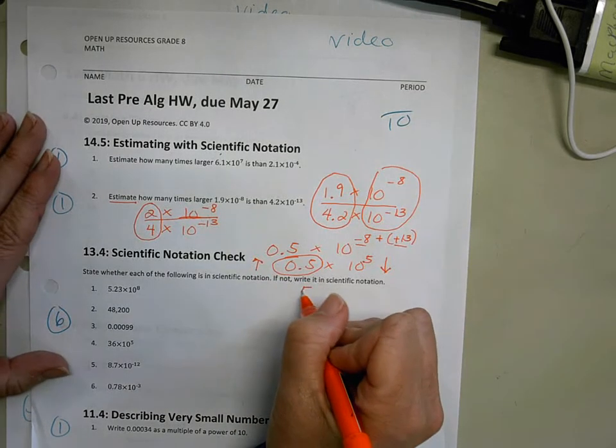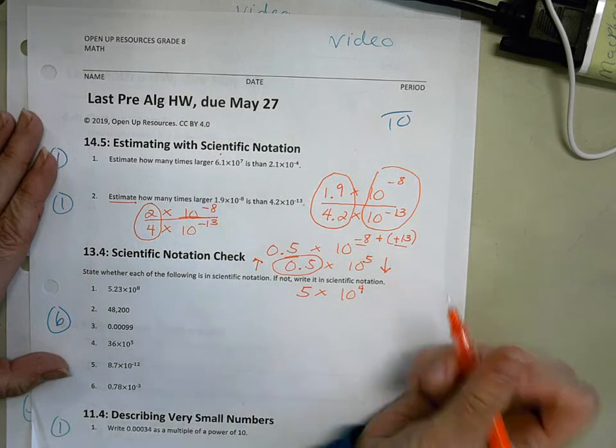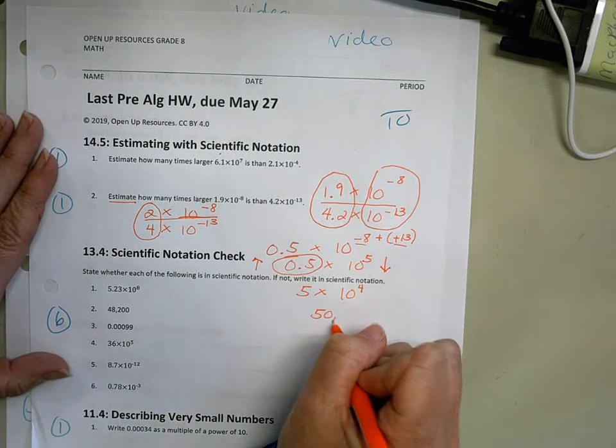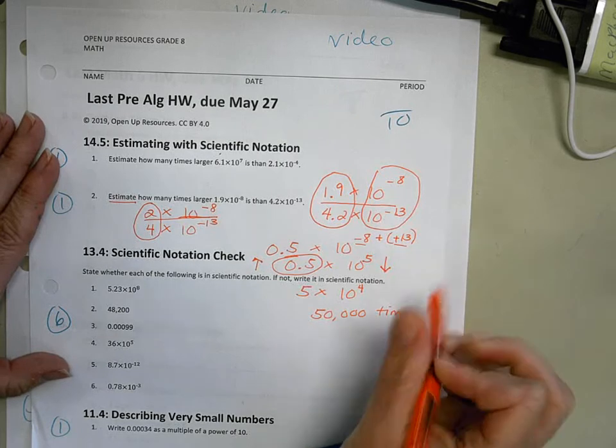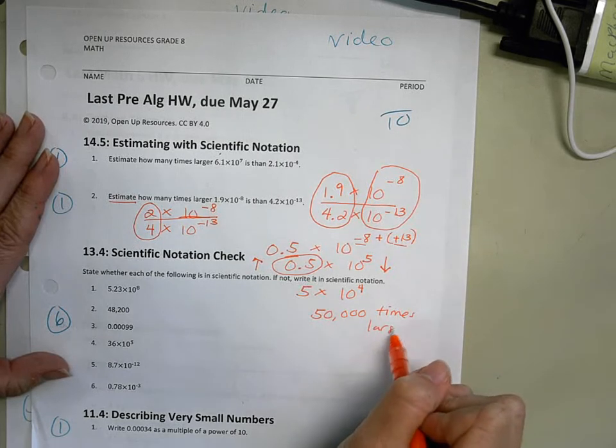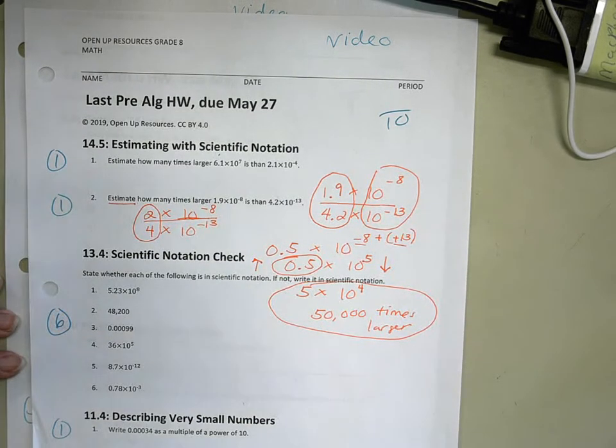Which means my answer is 5 times 10 to the 4th power, which means it's going to be 50,000 times larger. I hope that helps. Homework tonight is just the front.